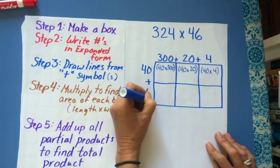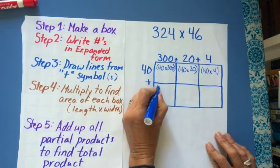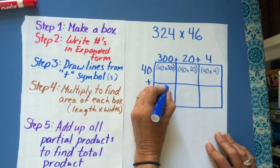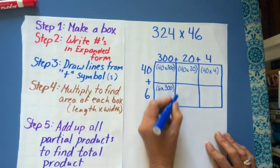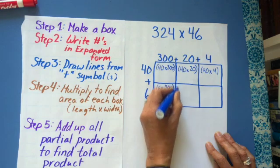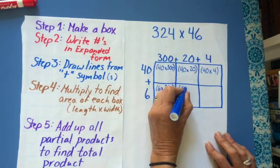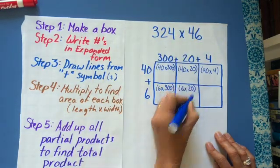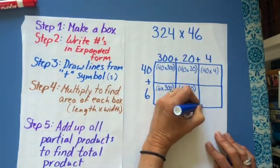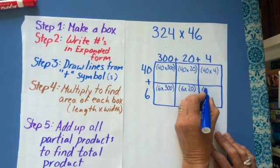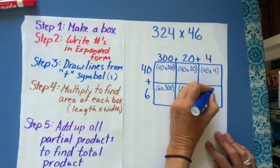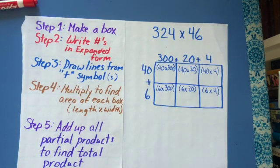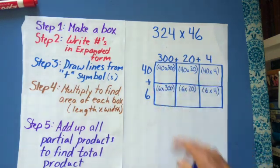So down here, I need to know the length of this side, which is 6. And the length of this side, which is 300. I need to know the length of this side here, which is 6, and the length of this middle box line, which is 20. And then I need to find the length of this side here, which is 6, and the length of this side here, which is 4. So now I've found every expression for my six boxes.